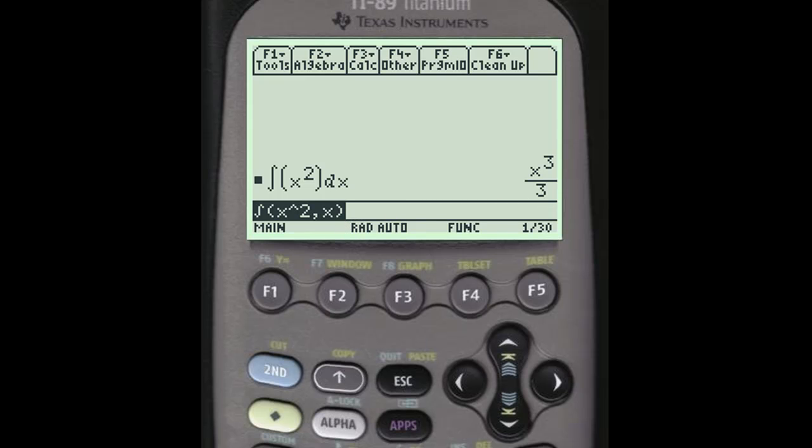To do a definite integral, one where you have limits of integration, you're going to add two more things, and if you guessed that they were the limits of integration you would be absolutely right. So after the variable of integration, so there's the function that you want to integrate, the variable of integration, comma, then in this order your lower limit, in this case let's integrate starting at 0, comma, your upper limit, and let's do 4 for this one.